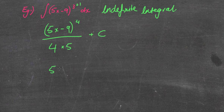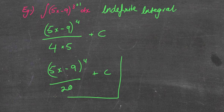Plus c. Then simplify it: 5x minus 9 to the power of 4, all over 20, plus c. Obviously, it is as easy as that. Like taking candy from a baby. Nice and easy.